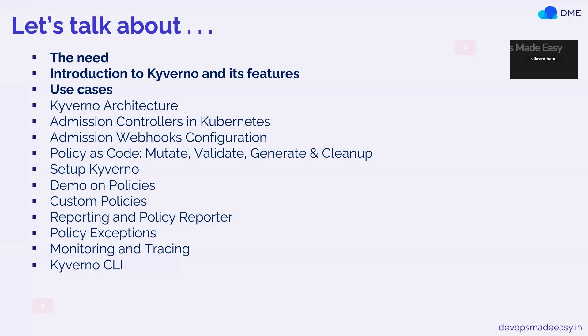Then we'll talk about what is policy as code and how many types of policies are supported by Kyverno. There are four to five of them — we have mutate policies, validate policies, generate, and cleanup policies. We'll go through the documentation in the next session. Then we'll talk about how to set up Kyverno and do lots of demos on all the policy types.